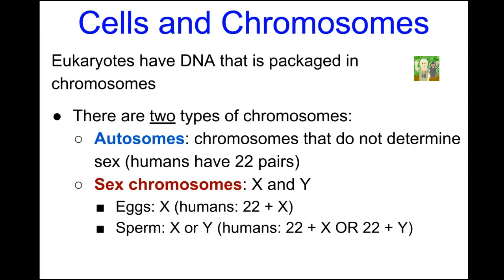The female always carries the X chromosome. If a male sperm with the X chromosome fertilizes the egg, the newborn child would be female. If a sperm with the Y chromosome fertilizes the egg, the resulting zygote would be XY and would develop into a male.